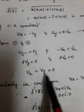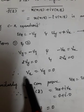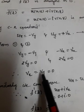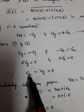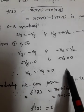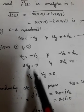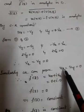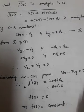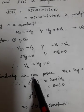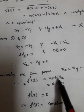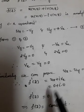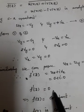Since v_x = ∂v/∂x = 0 and v_y = ∂v/∂y = 0, integrating both sides gives v = constant. Similarly, we can show u_x = u_y = 0, which means u = constant as well. Therefore f'(z) = u_x + iv_x = 0 + 0 = 0.